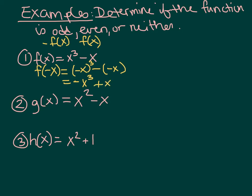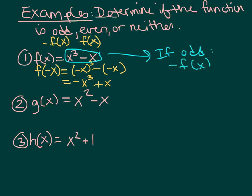Now, negative f of x would be negative times the whole thing — negative x cubed plus x — and if you simplify that, you get negative x to the third plus x. That's exactly what we got. Therefore, we know that this must be an odd function.